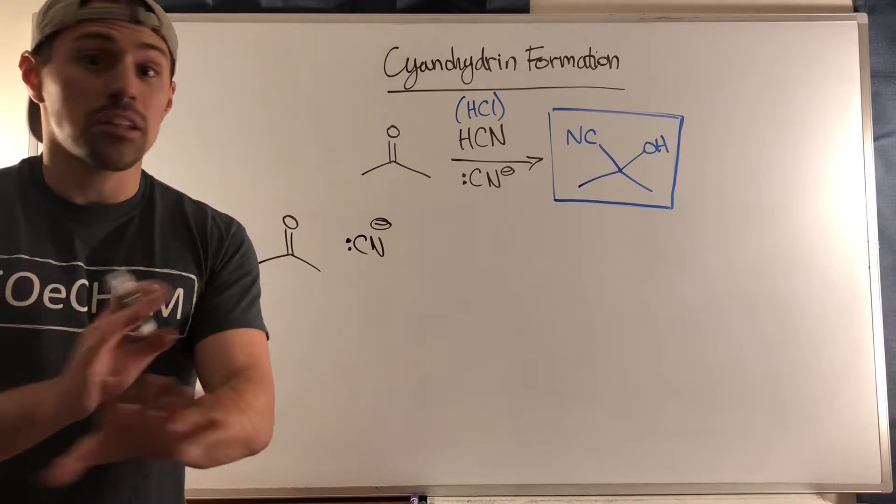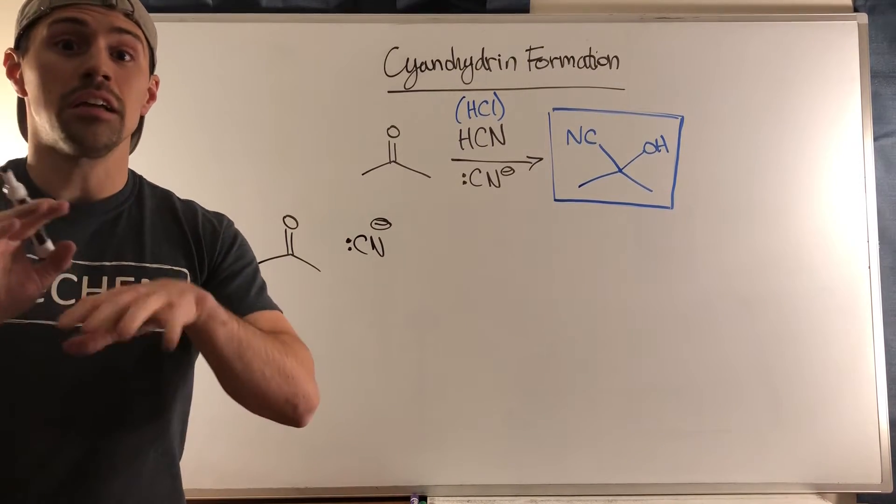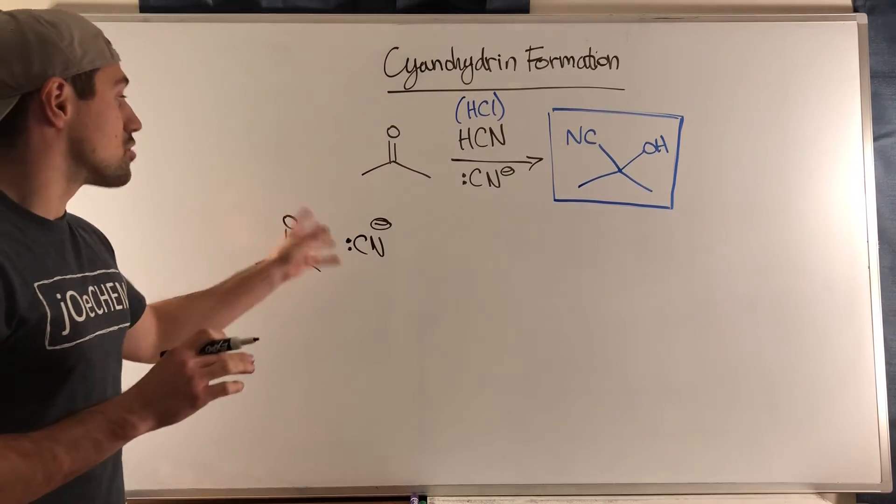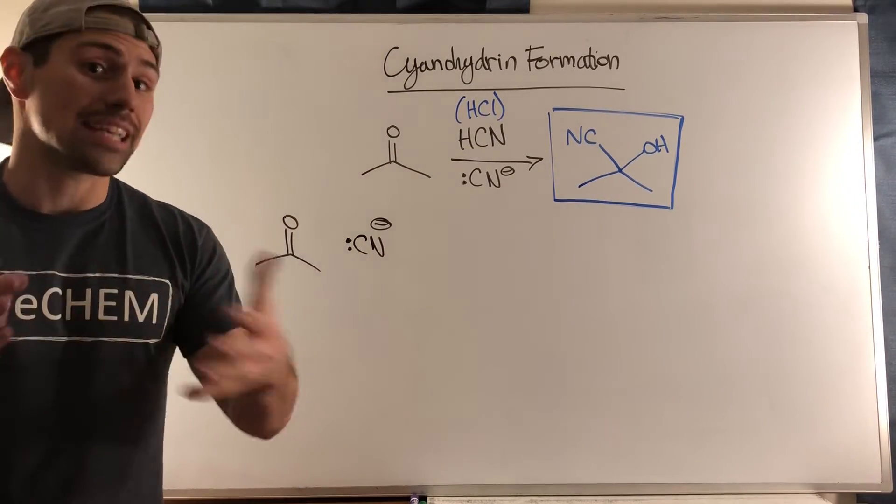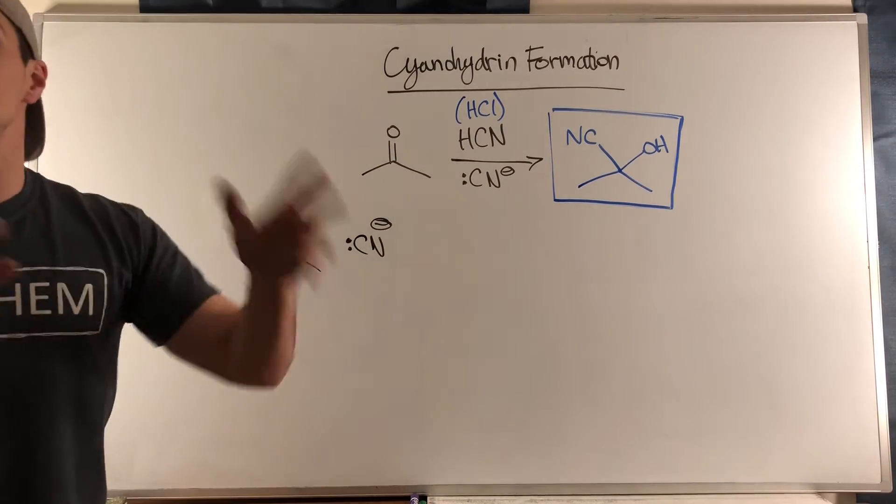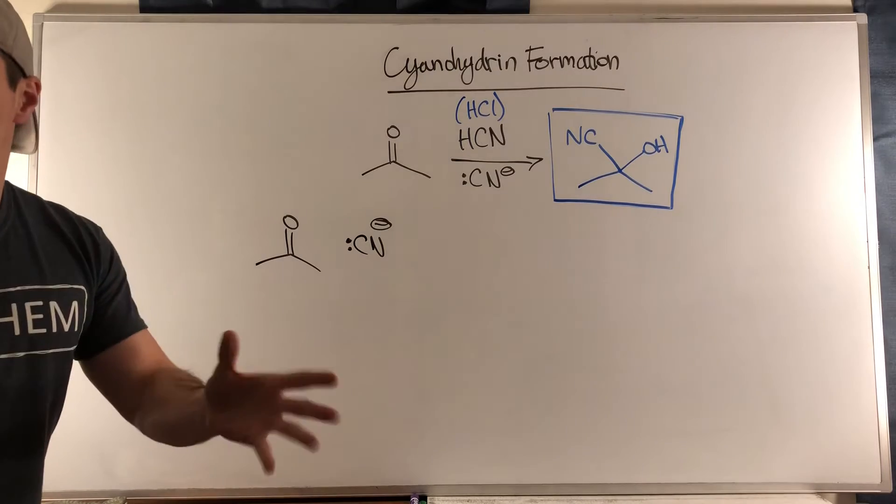You can if you want to, and I've seen this mechanism done that way where you use HCN, you protonate, the resulting CN minus that you get after that acid-base reaction is used to attack the carbonyl carbon. However, what I've seen most frequently is what I'm about to show you.